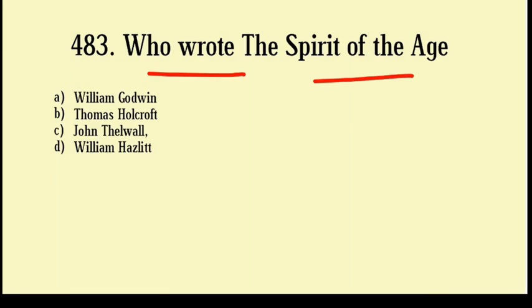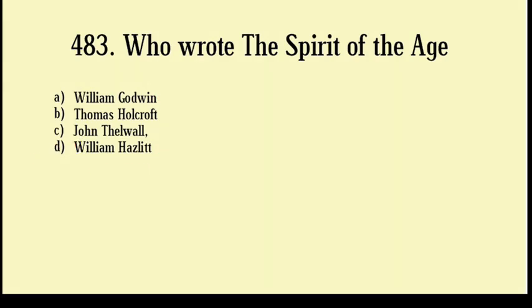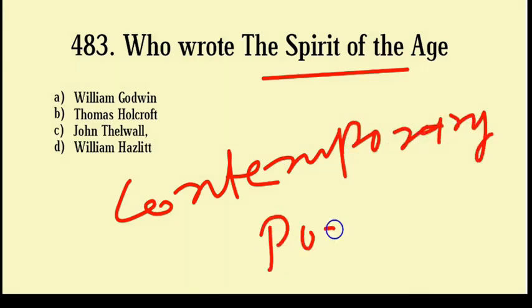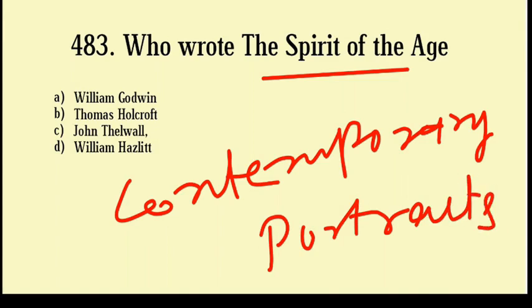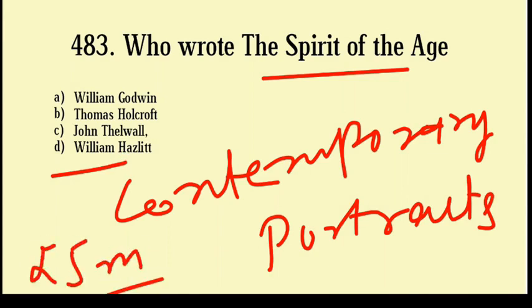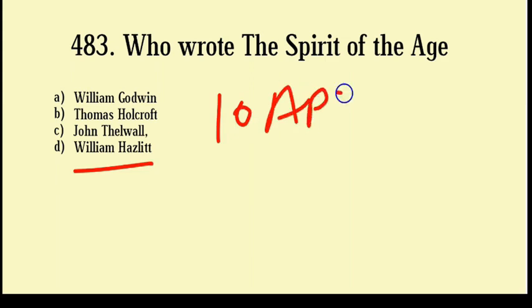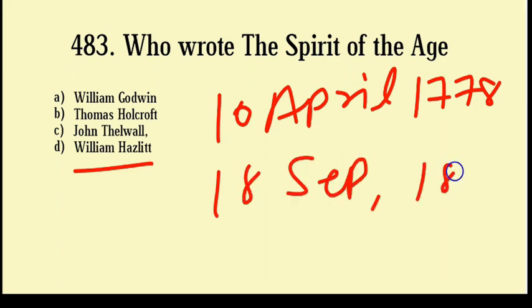Who wrote The Spirit of the Age? William Godwin, Thomas Holcroft, John Delvall, William Hagellit. Correct answer: Option number D, William Hagellit. Its full name is Spirit of the Age or the Contemporary Portraits. It is a collection of character sketches by William Hagellit portraying 25 men, mostly British, published in book form in 1825. William Hagellit was born 10th April 1778 and died 18 September 1830. He was an English essayist and critic, one of the greatest critics in the history of English literature.